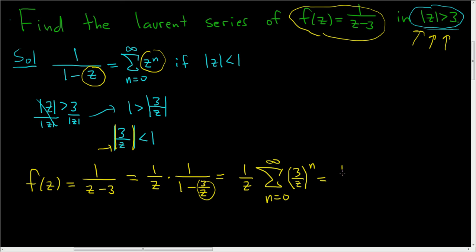And we can keep going. This is 1 over z, the sum as n runs from 0 to infinity, 3 to the n, z to the n. And let's go ahead and distribute the z.